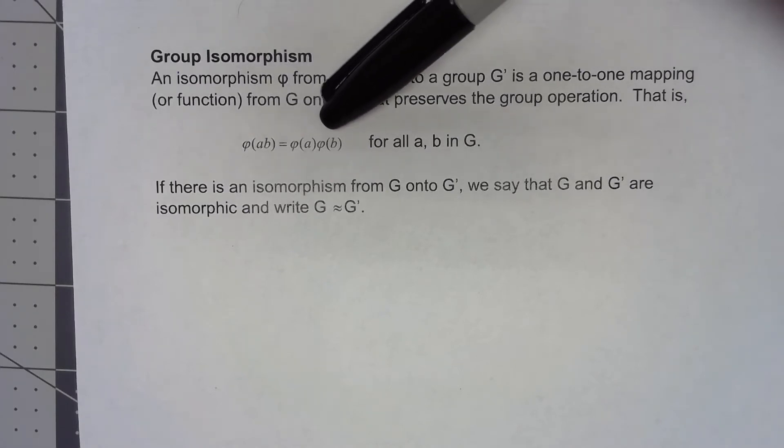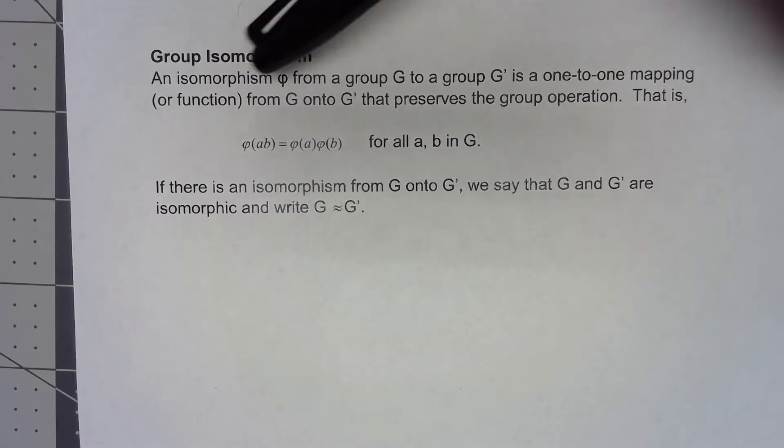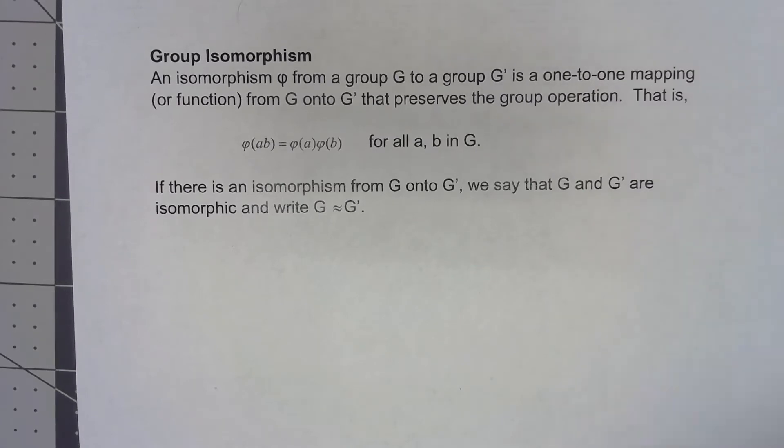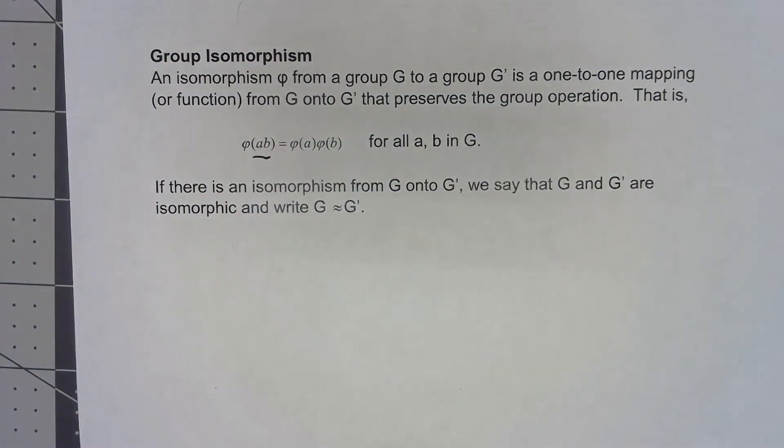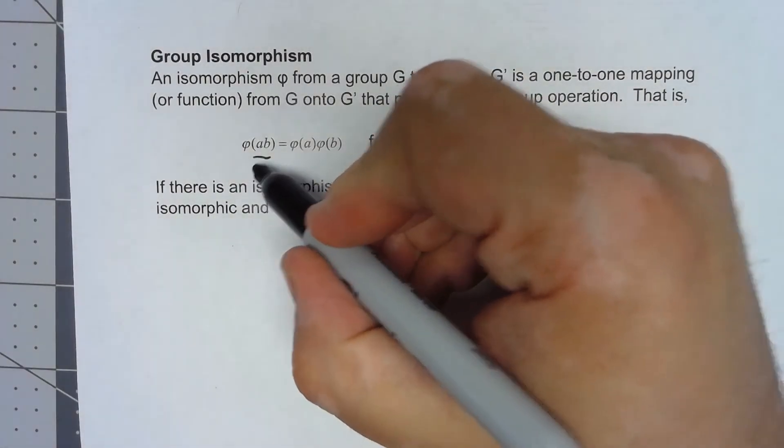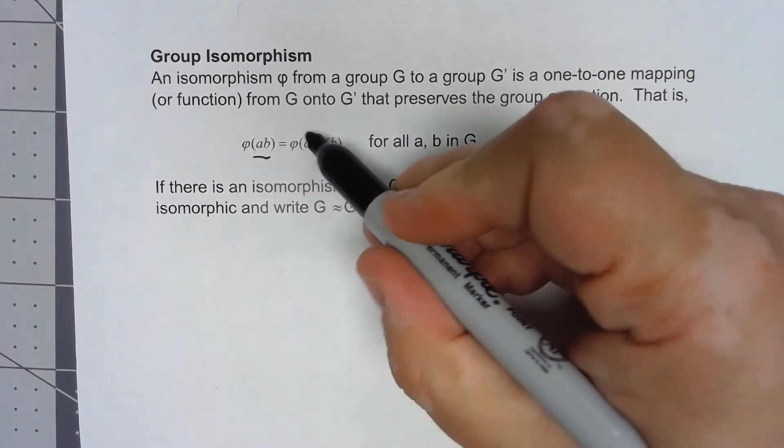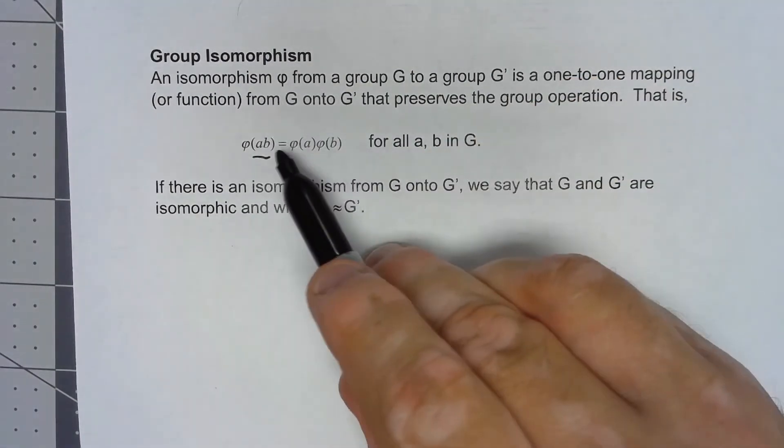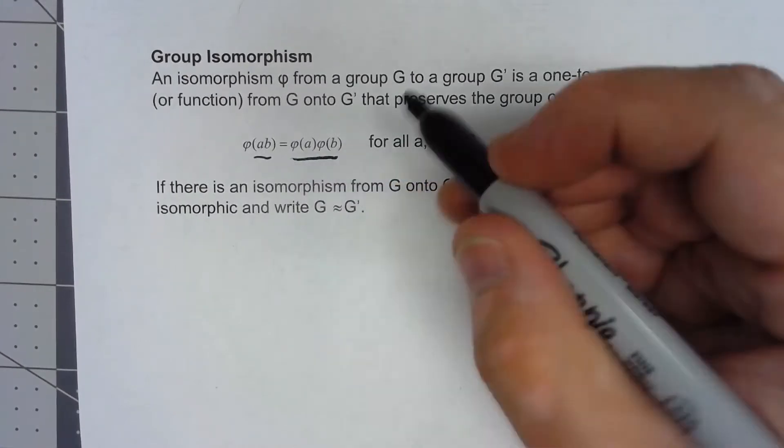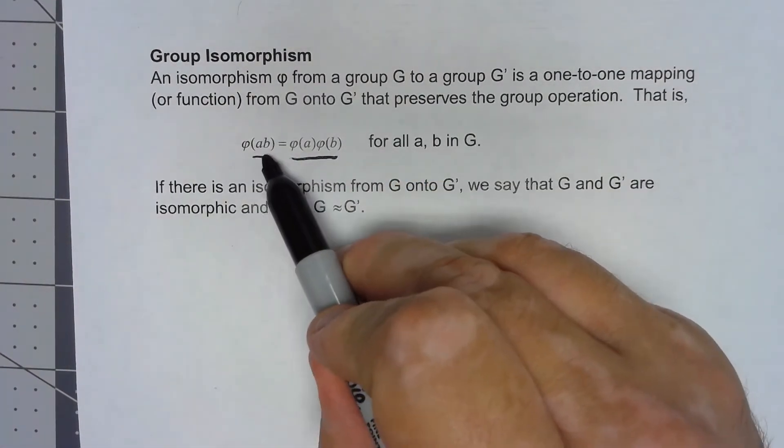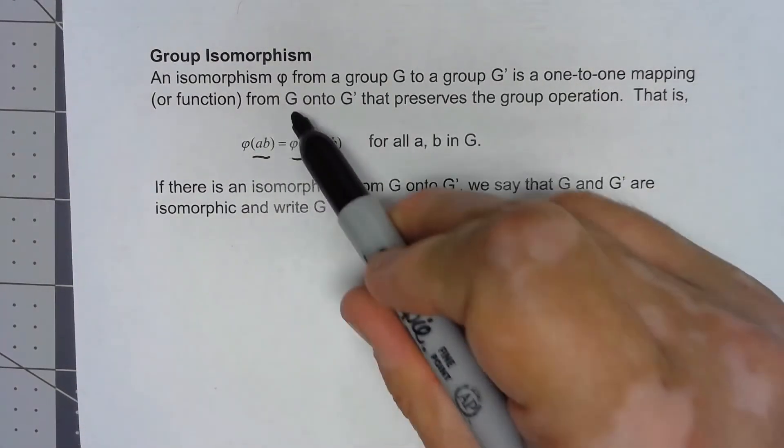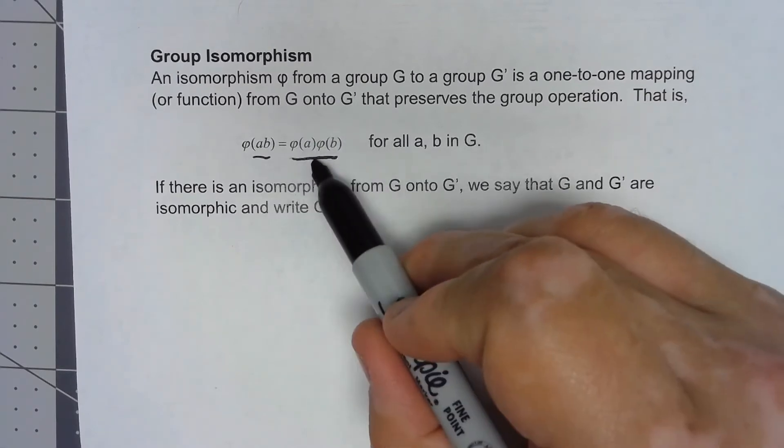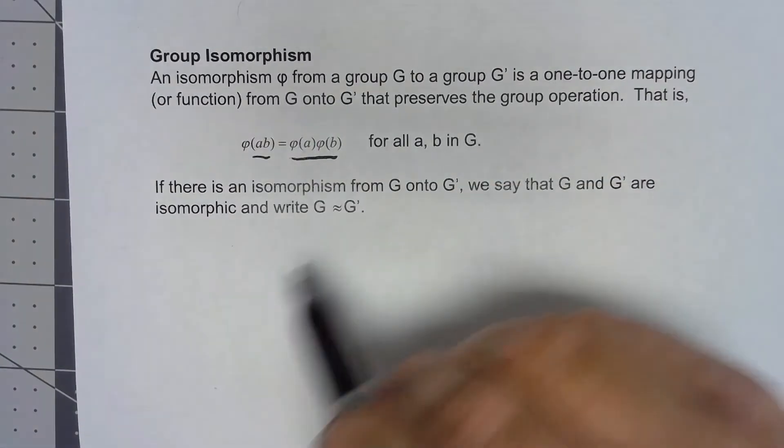But what's really important is this property that it preserves the group operation. It's important to think about this: because A and B are in G, this is the group operation of G. But over here, after you've gone through the function, these elements are elements of G prime. So basically, if we do the operation before we apply the function in G, or if we do the operation after we apply the function in G prime, either way we get the same result.